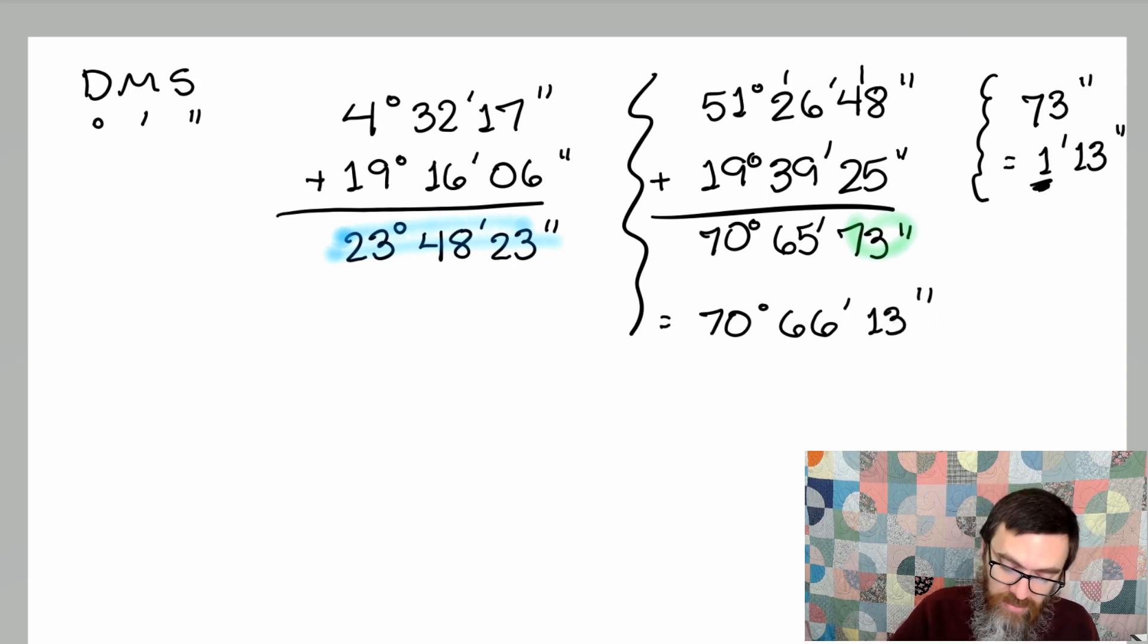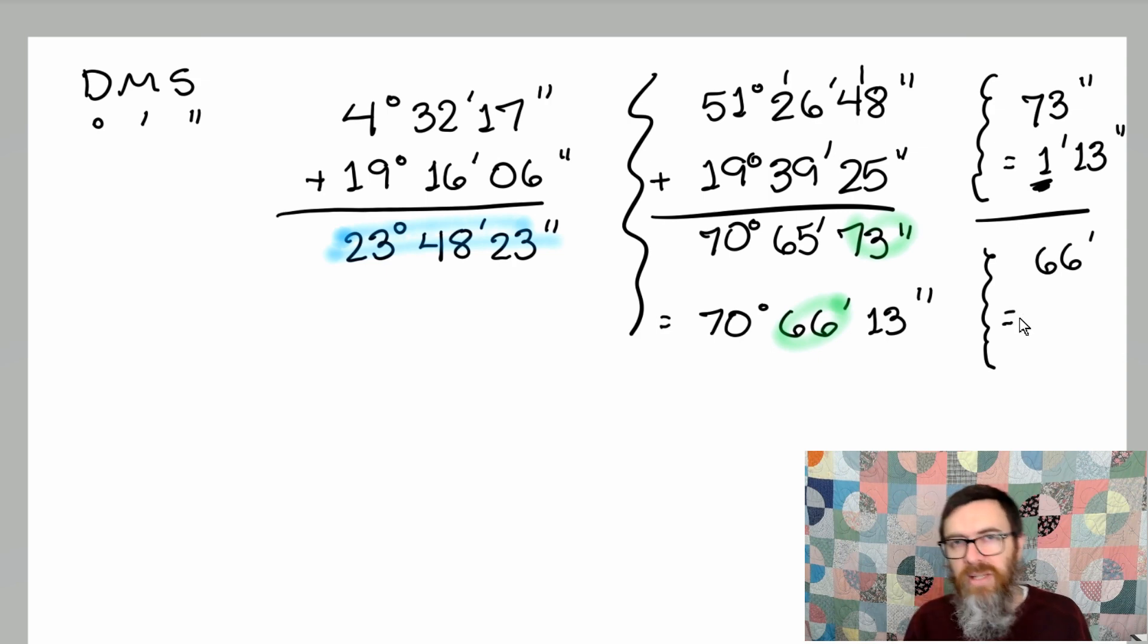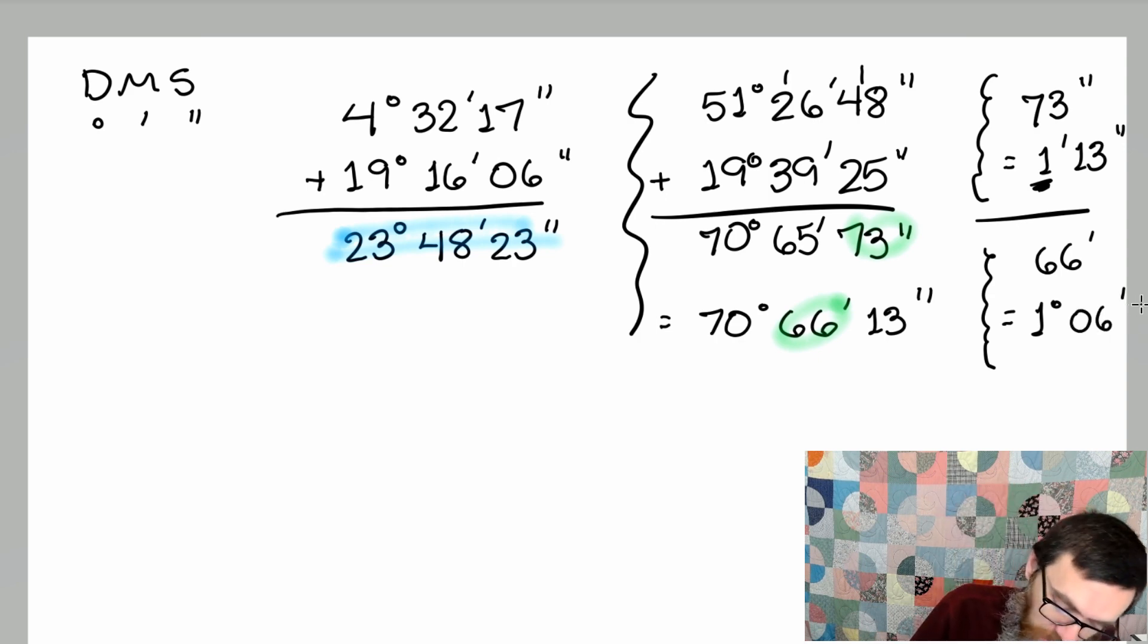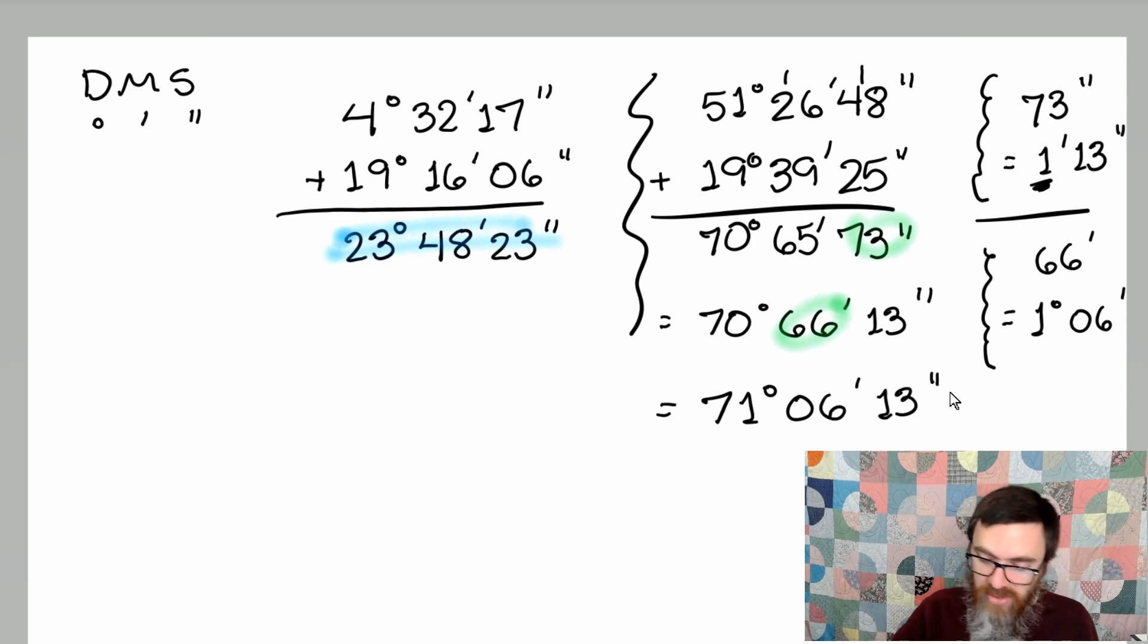Now we're running into another issue because we have this 66 minutes, and we're not supposed to have minutes that are more than 60. So just like we did over here, if I look at 66 minutes, every 60 minutes is going to give us 1 full degree. So this is 1 full degree, and then we have 6 minutes left over. So I'm going to be carrying 1 degree over, so it makes this 71 degrees, and then I have 6 minutes and 13 seconds. That is how we go about adding these. You just have to make sure you watch out and that you carry correctly.